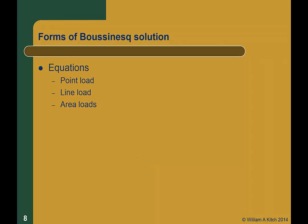Fortunately, there are simpler forms of the Boussinesq solution that we can use for quick computation. There are three basic forms of Boussinesq solutions for stress distribution. The first form consists of equations for point loads, line loads, and various shaped area loads such as circles, squares, and rectangles. These equations are very useful for programming into spreadsheets and programs, but rather tedious to use for simple hand calculations. We also have chart solutions, which are graphical representations of the equations already presented. These are fast and easy to use, but are available for only a limited number of loading conditions. And finally, there are approximate solutions, which are simplified versions of the basic Boussinesq equations and are easy to use. However, like chart solutions, these are limited to just a few loading conditions.